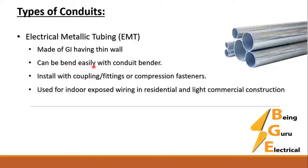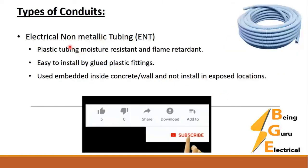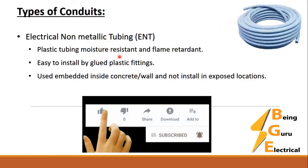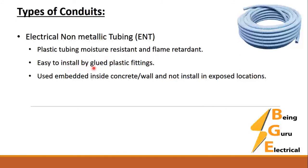Next we have Electrical Non-Metallic Tubing, or ENT. As you can see in the picture, this is a plastic tubing that is moisture-resistant and flame-retardant, and easy to install using glued plastic fittings. It is used embedded inside concrete walls and is not installed in exposed locations — for exposed locations, metallic conduits are used.